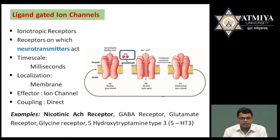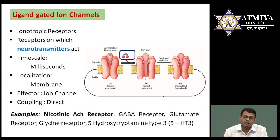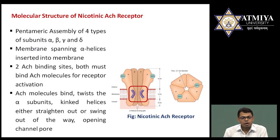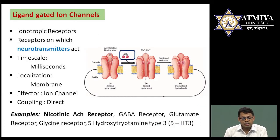Ligand-gated ion channels work very fast and are located on membranes only. The effector molecule is the ion channel itself. Examples include the nicotinic acetylcholine receptor, GABA, glycine, 5-HT3, and glutamate receptors.